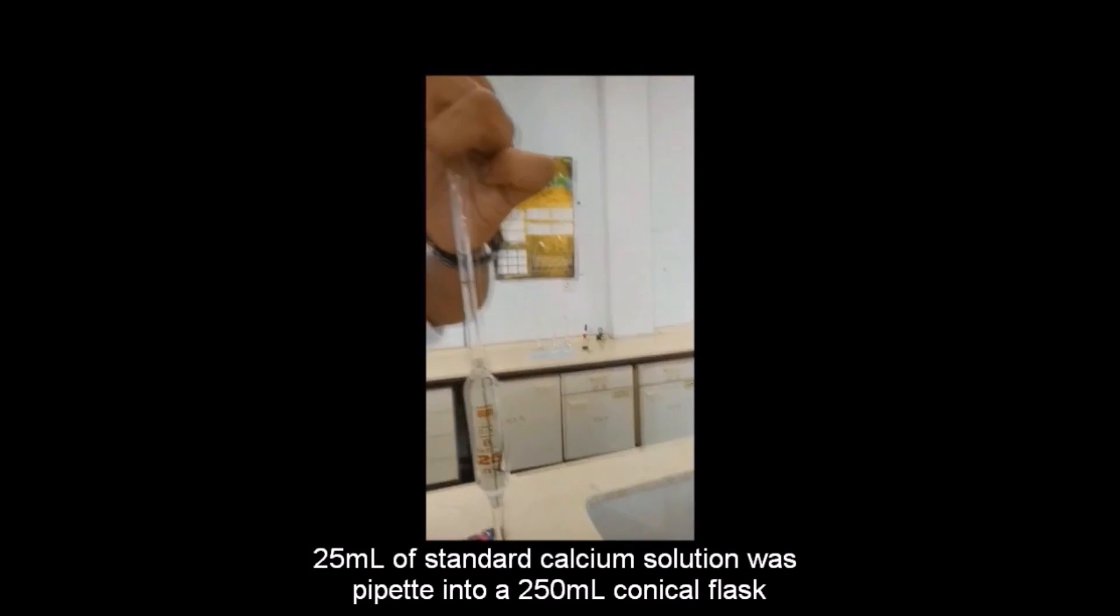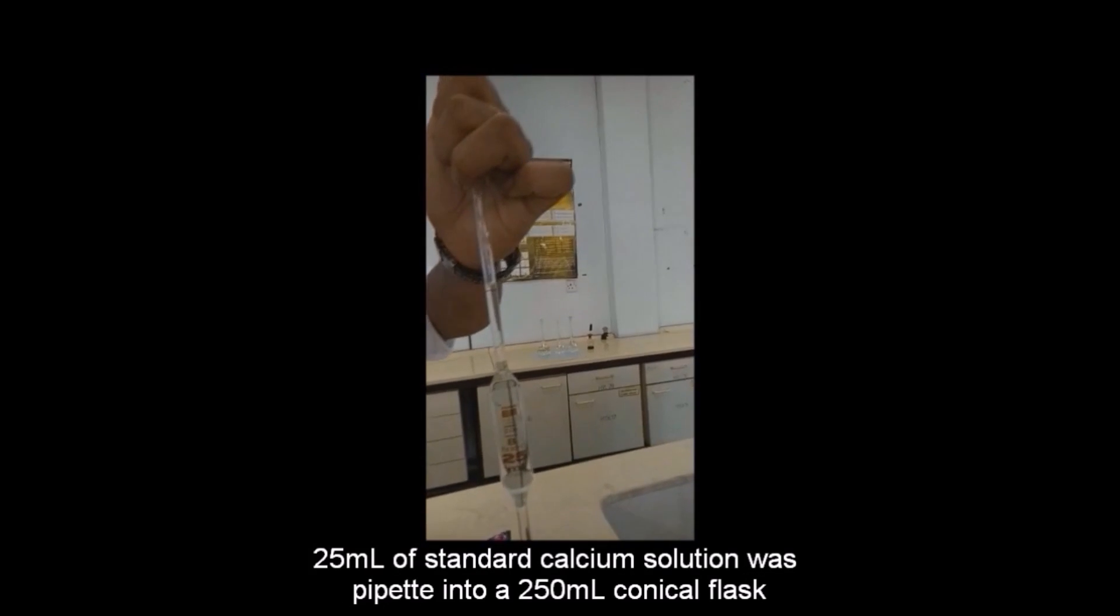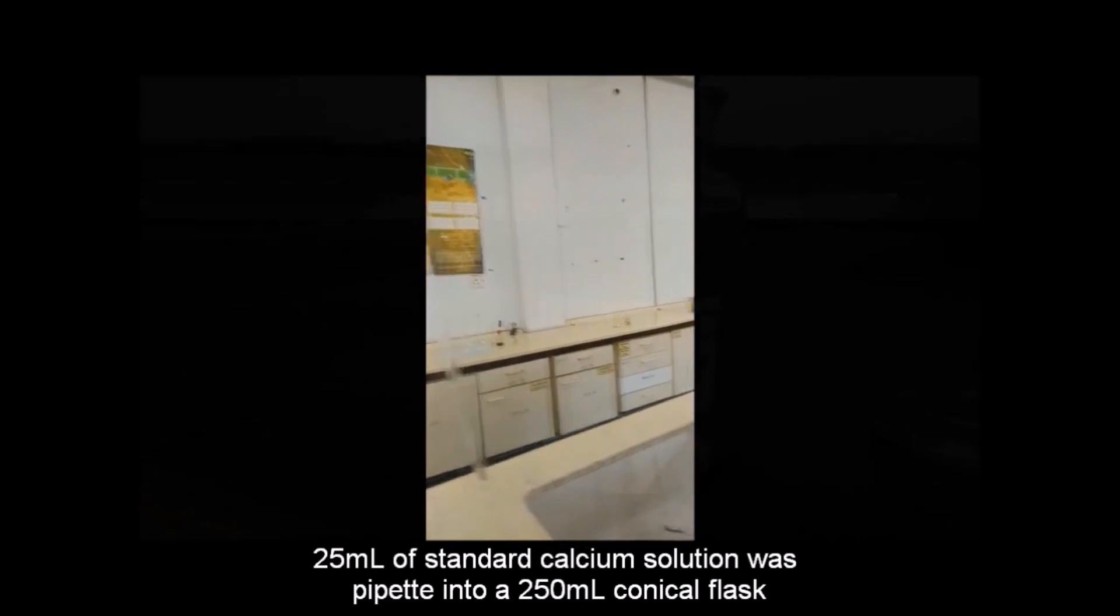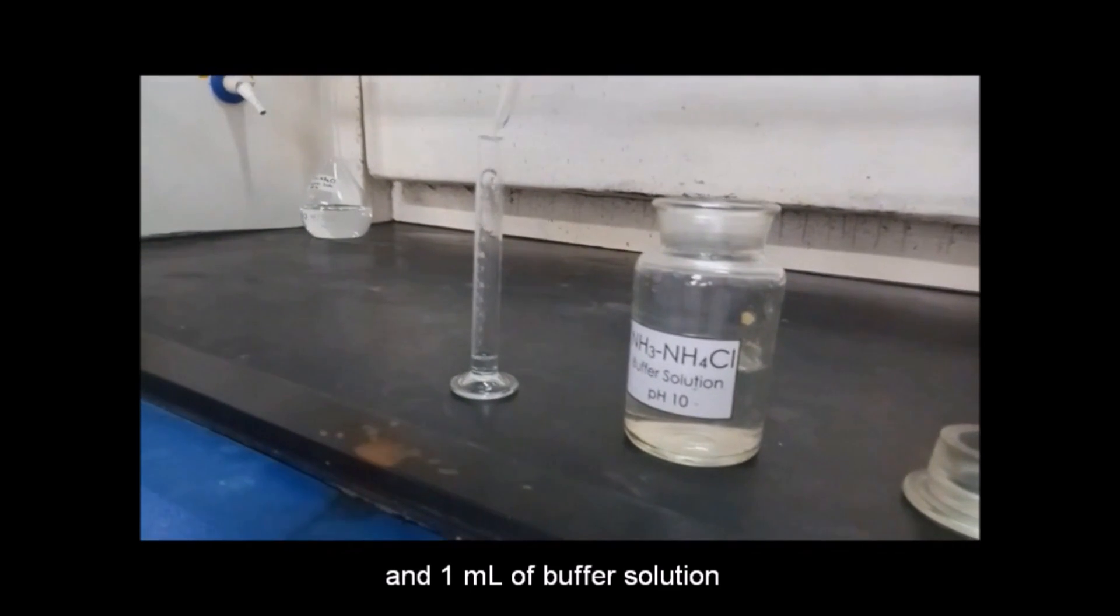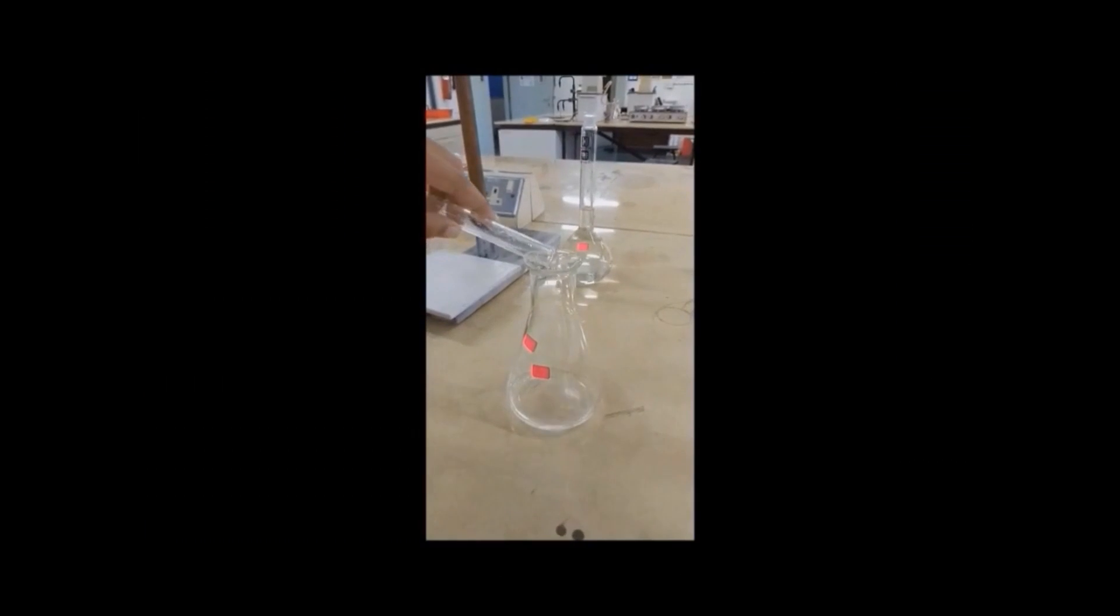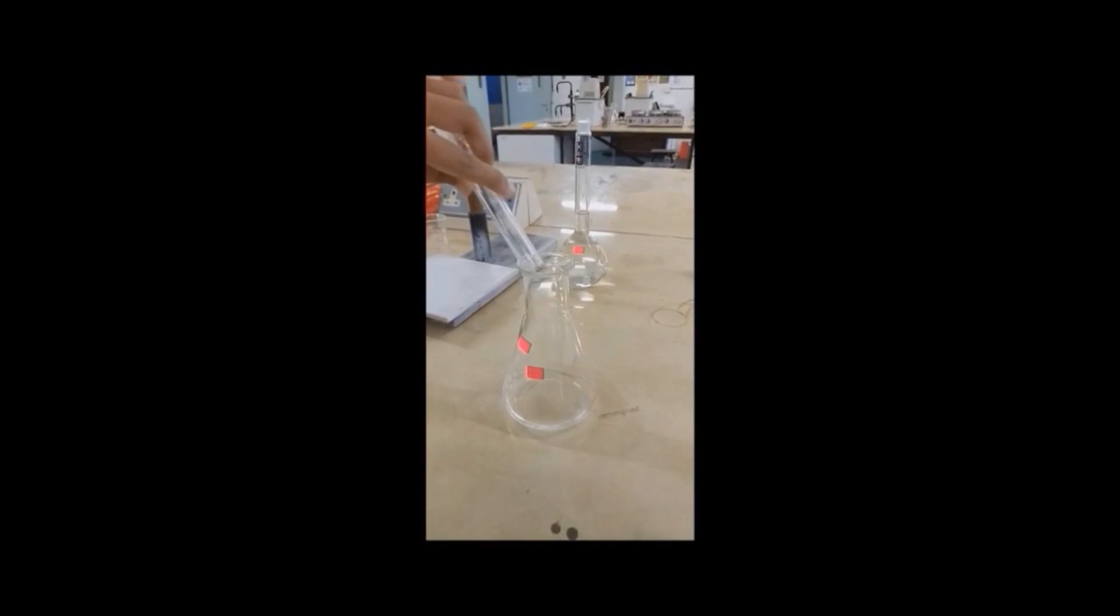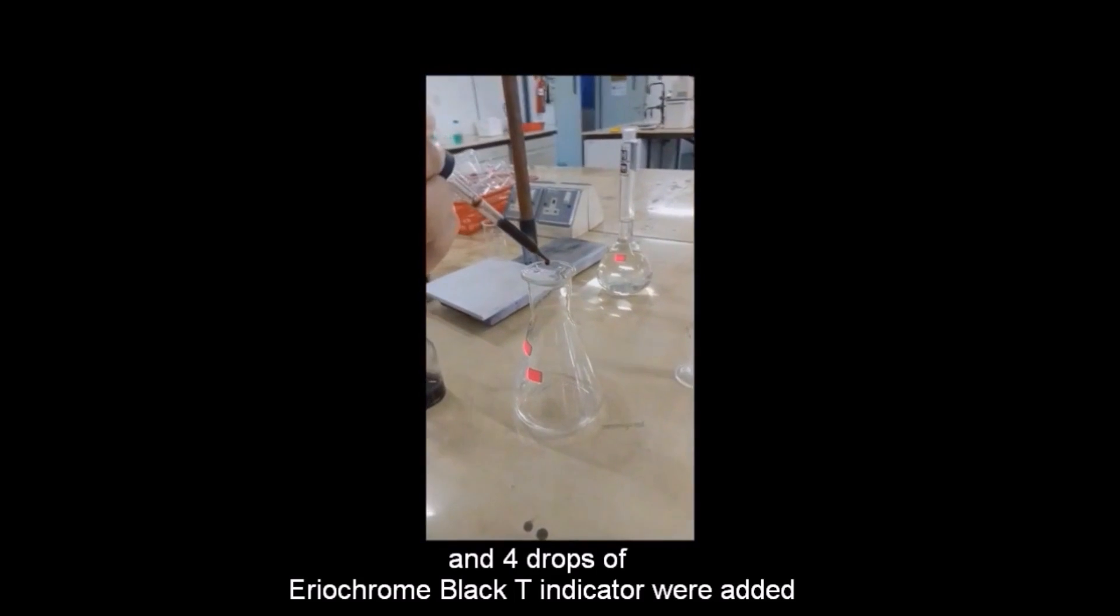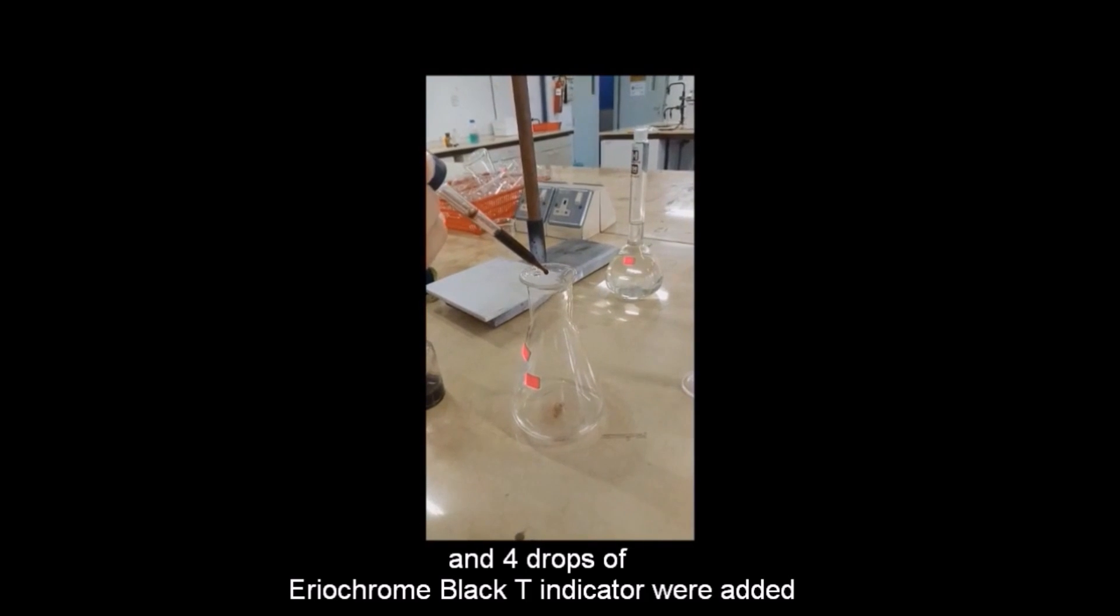25 ml of standard calcium solution was pipetted into a 250 ml conical flask and 1 ml of buffer solution, ammonium chloride, and 4 drops of Eriochrome Black T indicator were added.